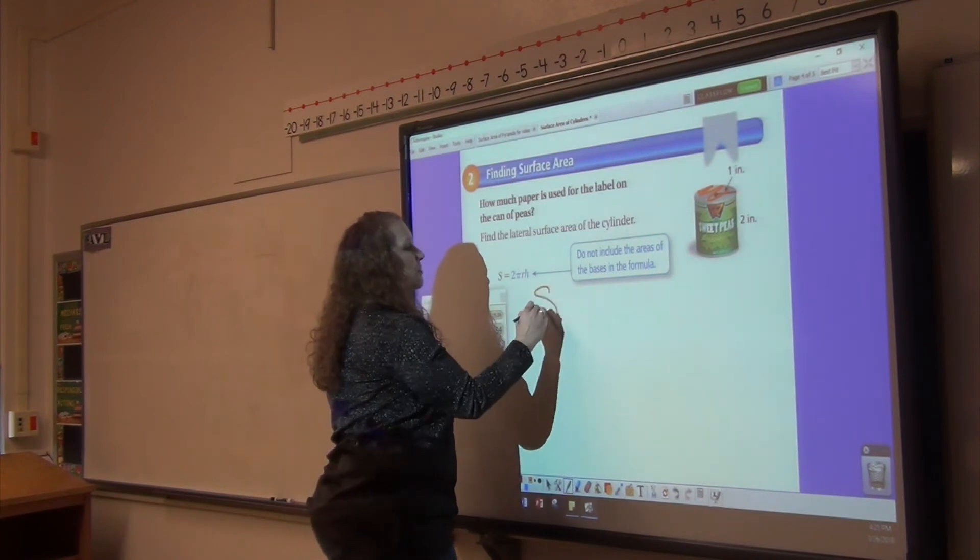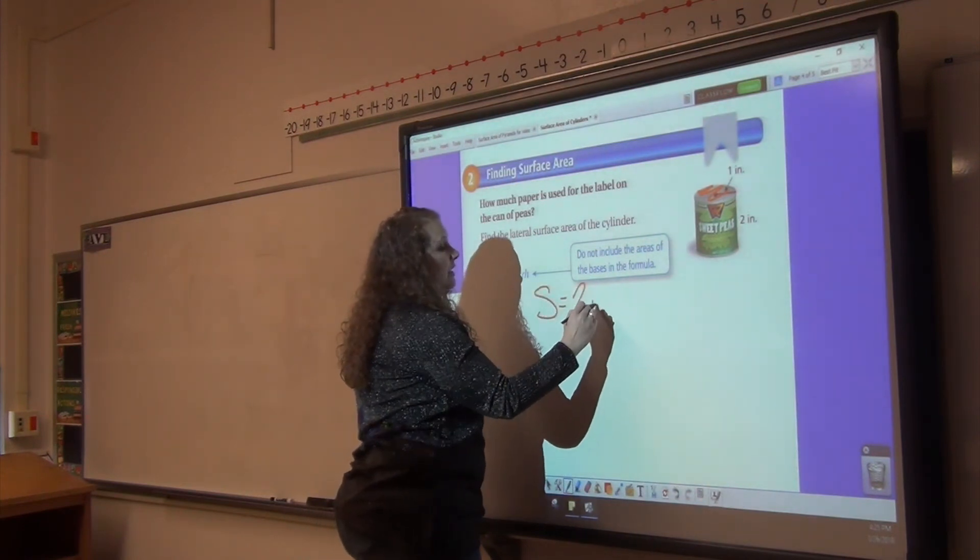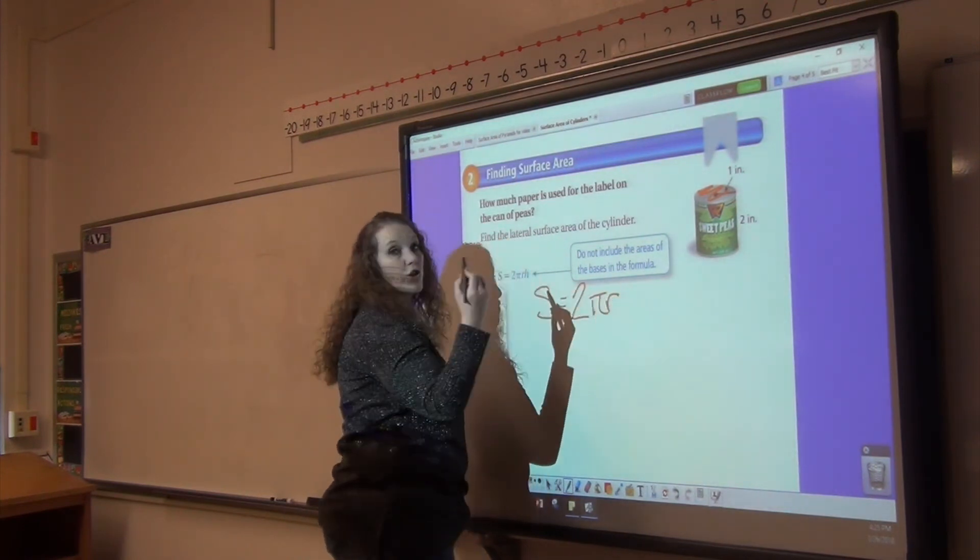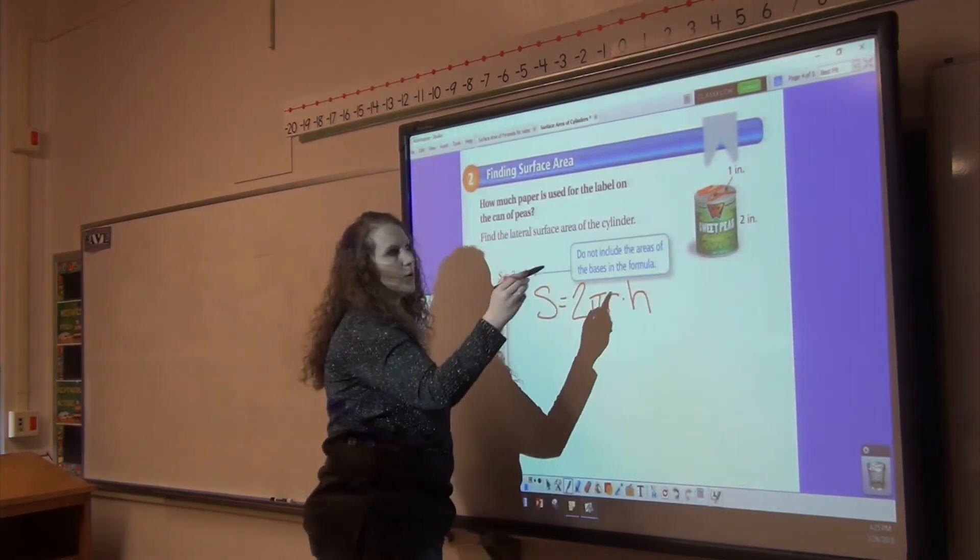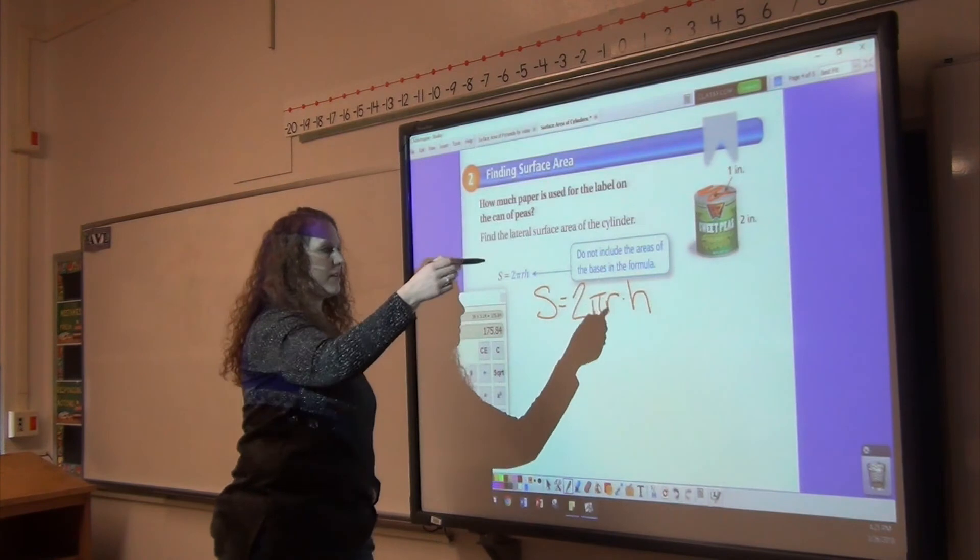So our formula for this is just part of our surface area. It is 2πr, which is our circumference of our can, times the height, which is how tall our label is.